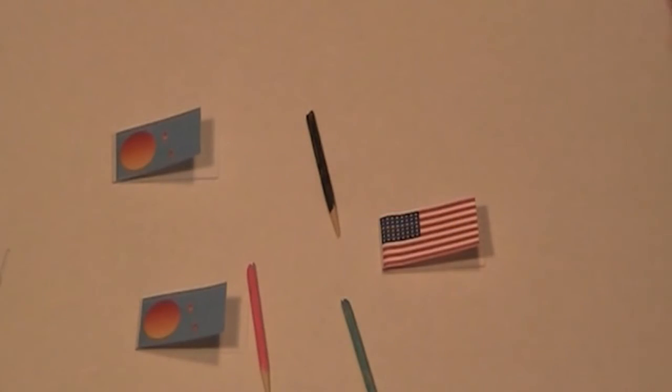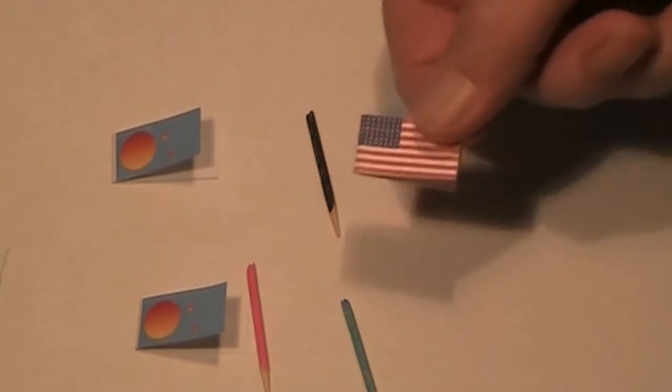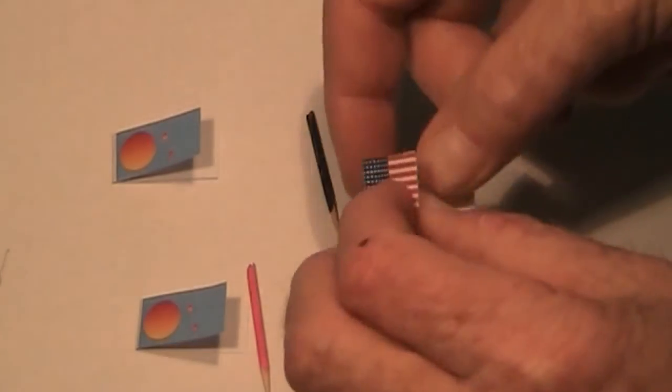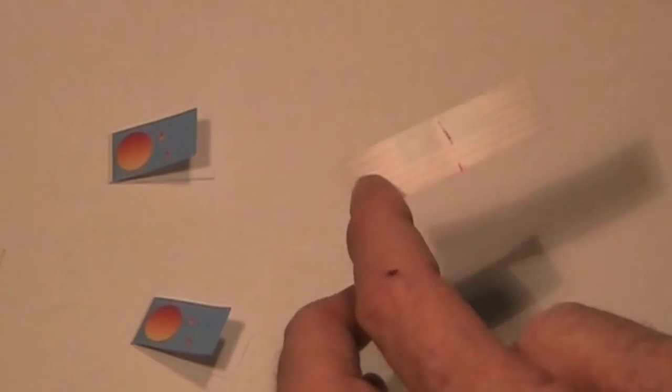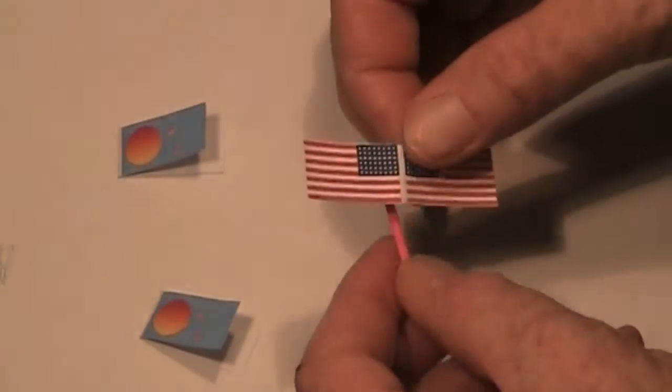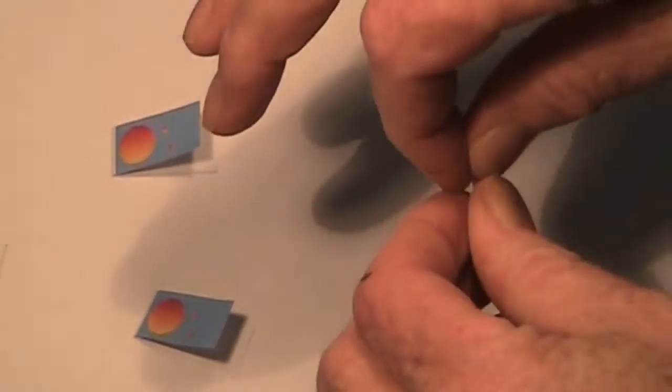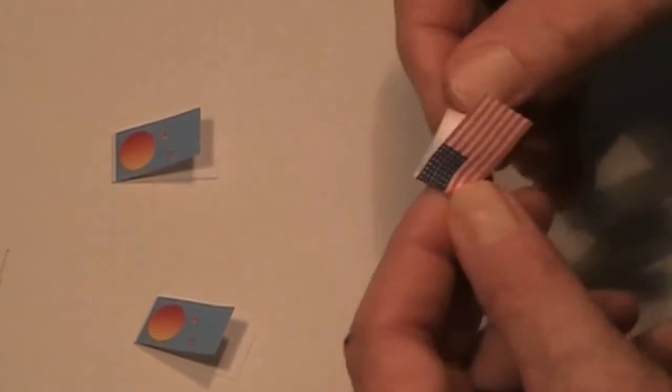Now, we're going to put the flags on the posts you've made. We'll start with this American flag. Just open it up, and on the inside, use your glue stick to put a little bit of glue on both sides. Now, take one of your toothpicks and put it behind the flag. All you do is fold the flag around.